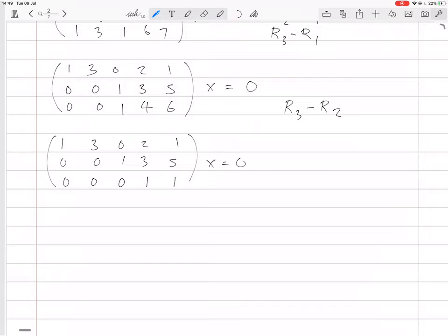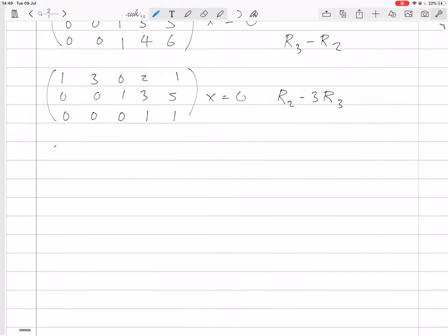Now let's do row 2 minus 3 times row 3. So that gives us 0, 0, 1, and the second row becomes 0, 0, 1, 0, 5 minus 3 is 2. We can also at the same time do row 1 minus 2 times row 3. So then that'll be 1, 3, 0, and then 0 there, and we'll have 1 minus 2, so minus 1. That's all you can do. Everything above each pivot is 0.